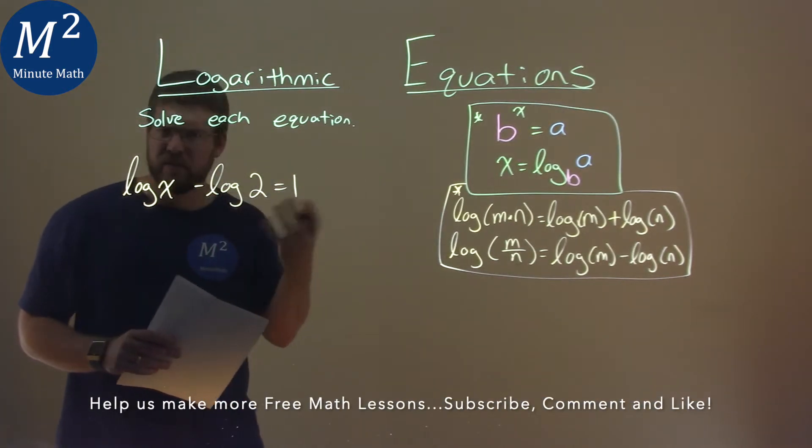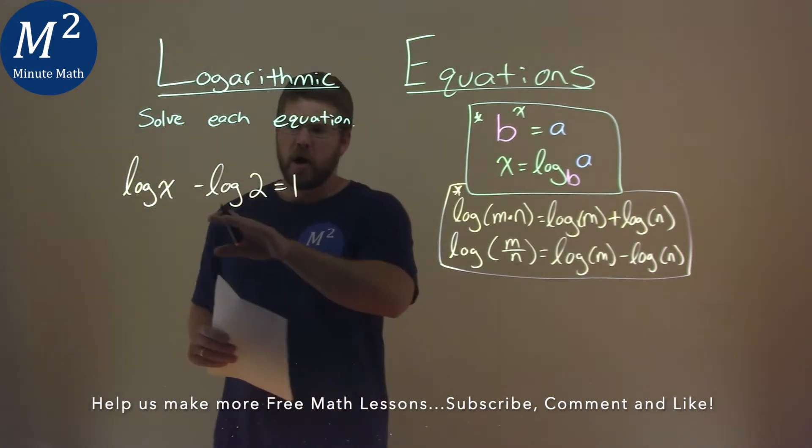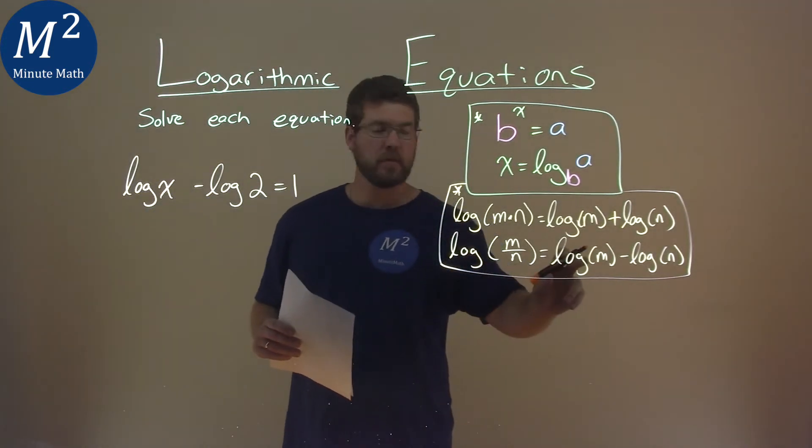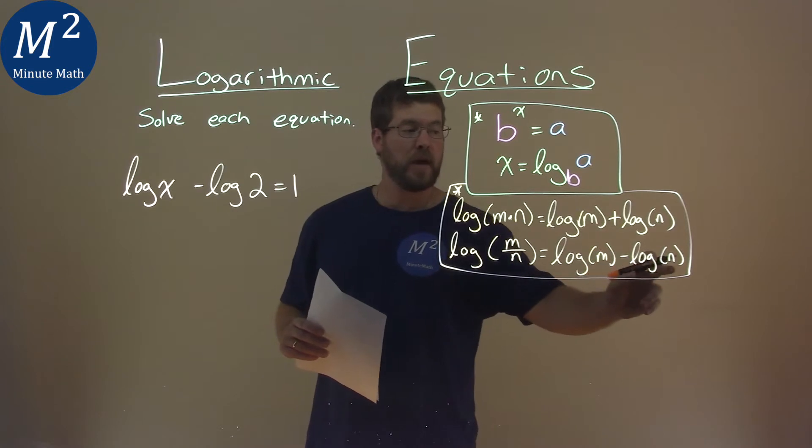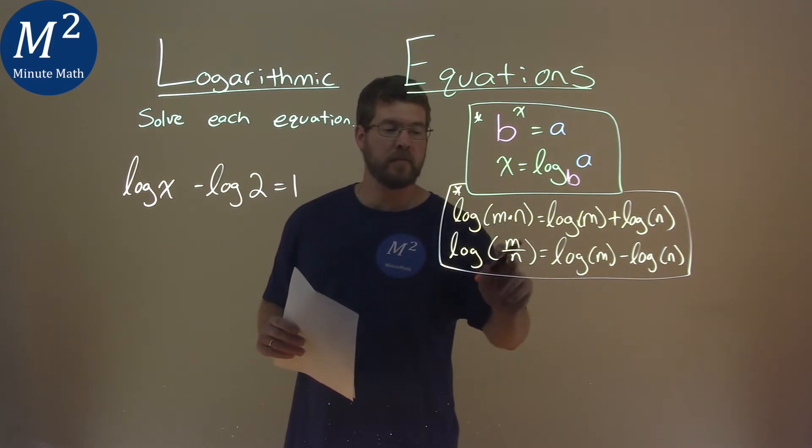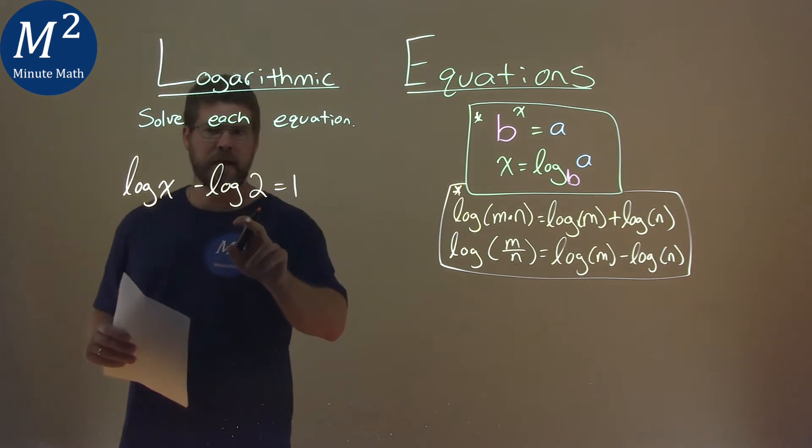Now these logs have the same base of 10. Our formula here, the second part down here, says if we have a log of m minus log of n, it's equal to log of m divided by n. And we have that here, we can adapt that.